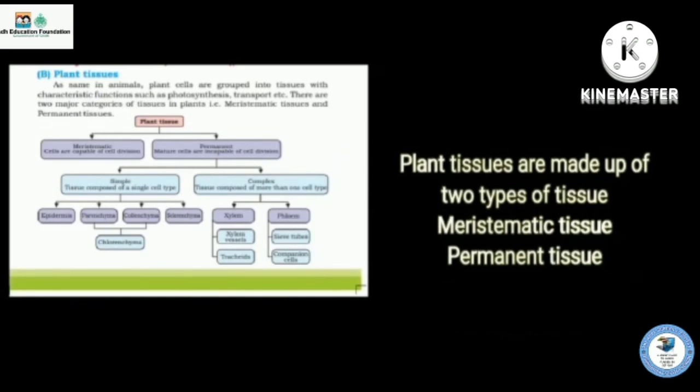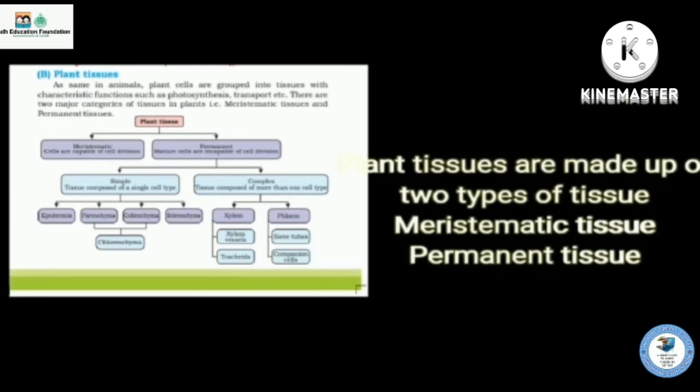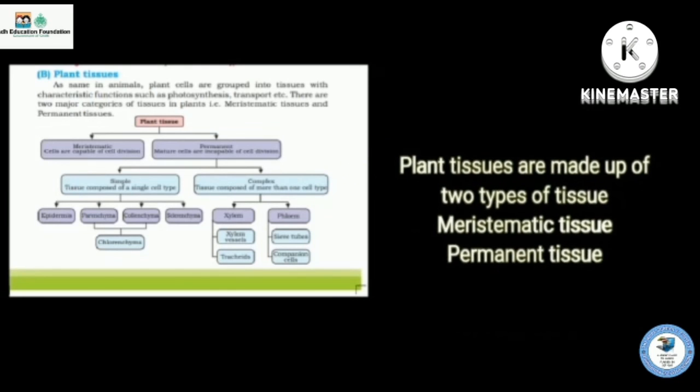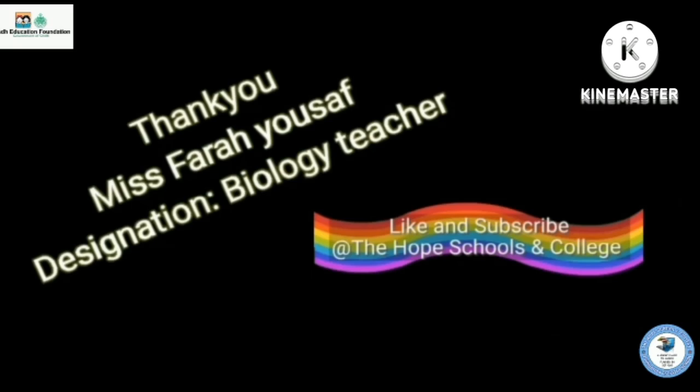Plant tissues are made up of two types of tissue, meristematic tissues and permanent tissues. Thank you so much. Don't forget to like and subscribe the Hope School and College.